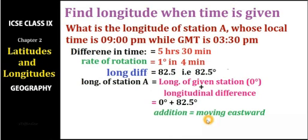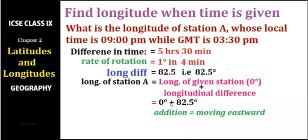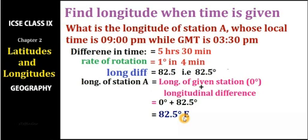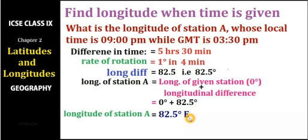Adding 82.5 degrees to the given longitude of 0 degrees, we get 82.5 degrees East. It is East because when we add we move eastward from the given longitude. If it were subtraction, we would move westward. In our case the given longitude is 0 degrees, so the answer is 82.5 degrees East, which can also be written as 82 degrees 30 minutes East. Both are the same.